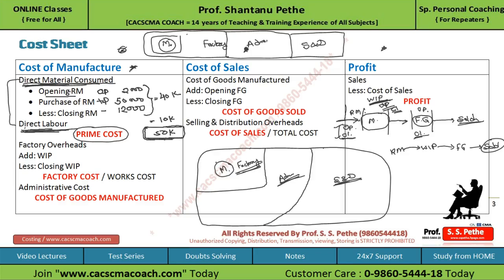In a factory, apart from direct material and direct labor, there are various overheads — many expenditures incurred within the factory. Whatever expenditure is incurred within the factory that is not direct material or direct labor will be treated as factory overheads. Assume the total factory overhead during the period is Rs. 30,000. We add this factory overhead of Rs. 30,000 to the prime cost.